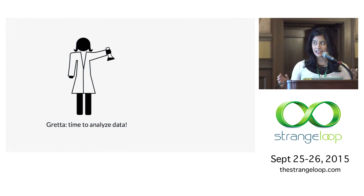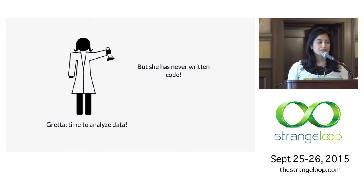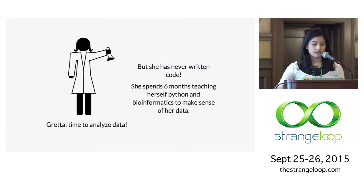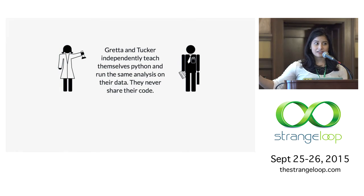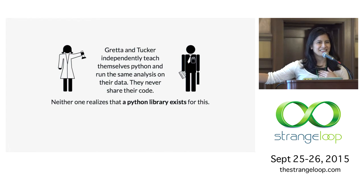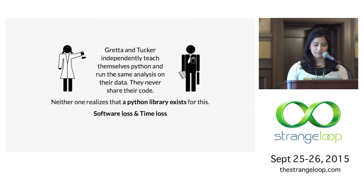It's time for Greta to analyze her data. She's never written code — she did her undergrad in biology where they memorize taxonomies and sit in labs for hours but never use code. She spends six months teaching herself Python and bioinformatics just to make sense of her data, which is immense and growing as sequencers get better. Both Greta and Tucker have the same problem and are independently teaching themselves Python, writing very similar code to run on their same data sets. But no one tells them there's a Python library that does all this for them, because they're learning by themselves. So there's software loss and time loss from rewriting things that already exist.